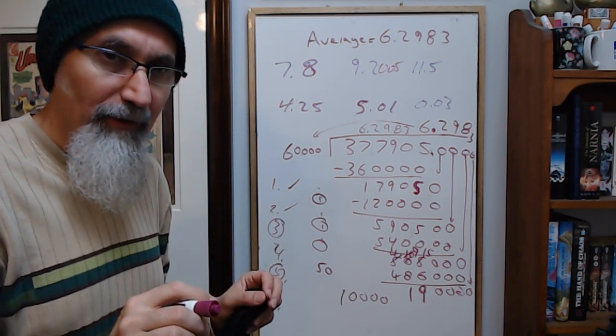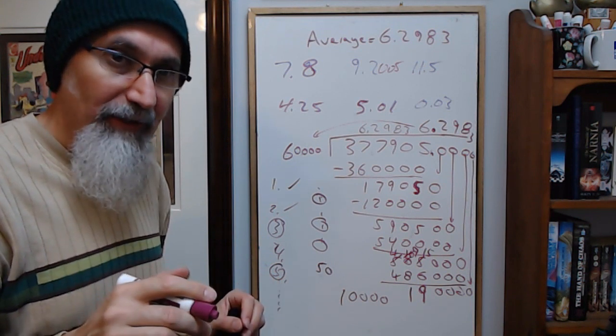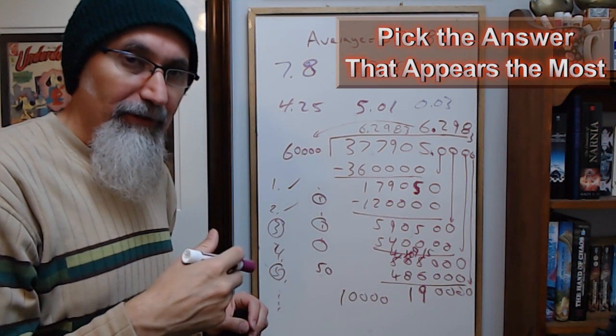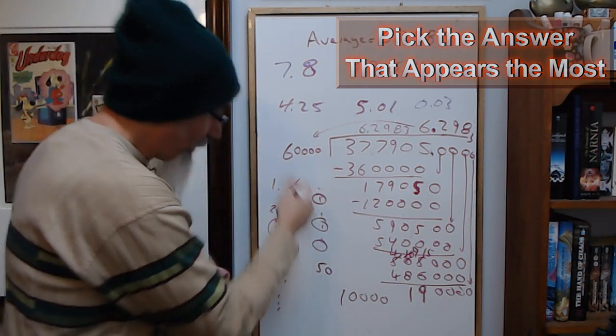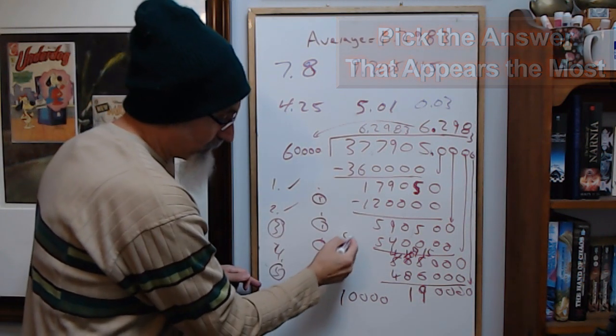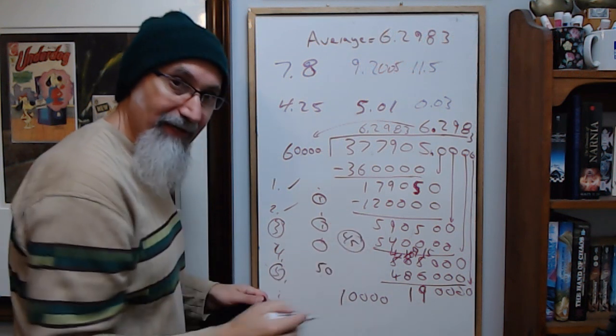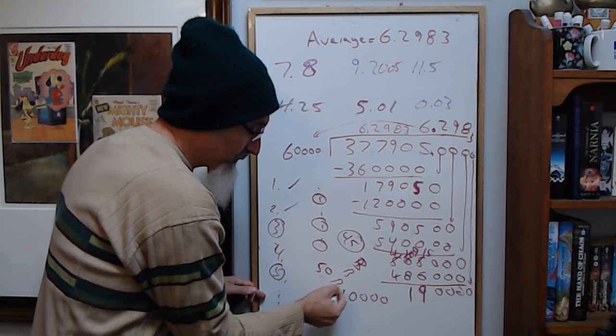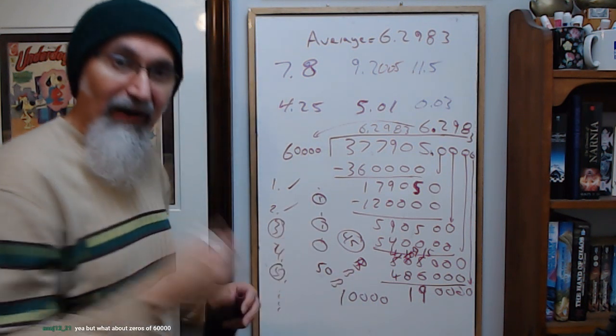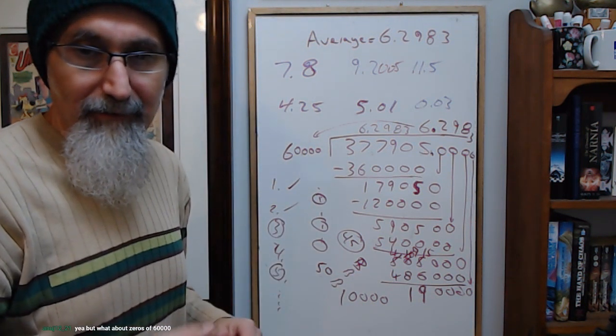If you're going to guess on them, guess the letter that appears the most in all the other ones you answered. So in all the other questions you've answered—there's 45 questions that you've answered—if B is the one that appears the most, answer the five with B.